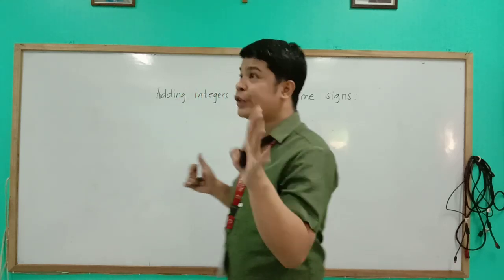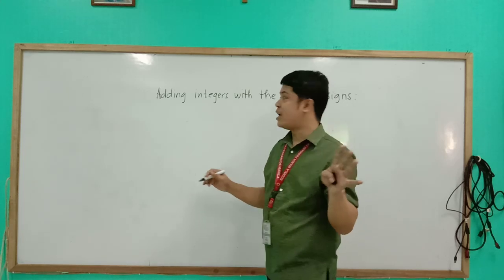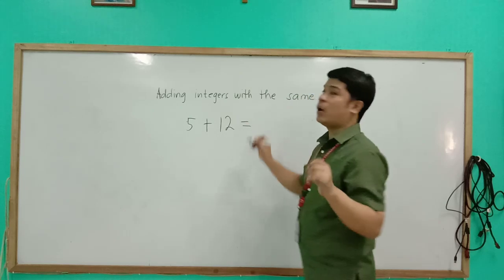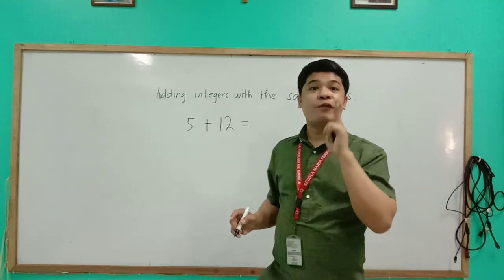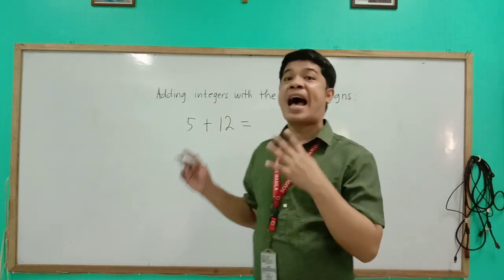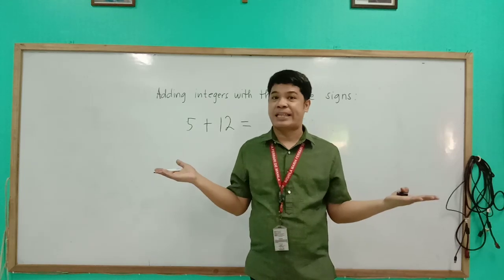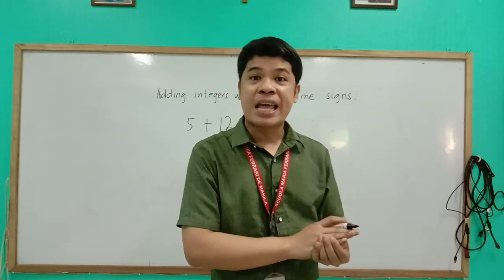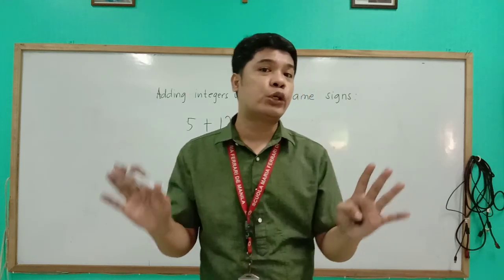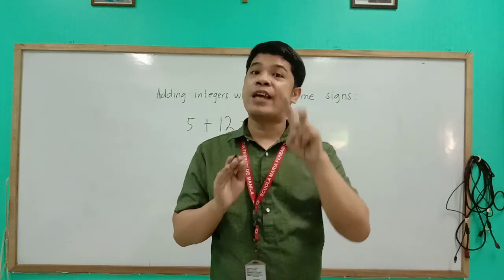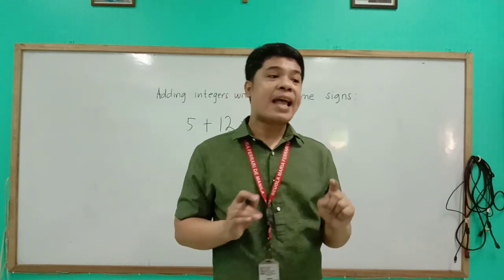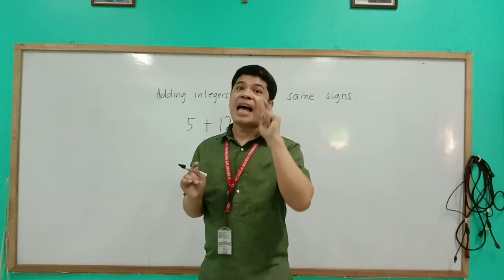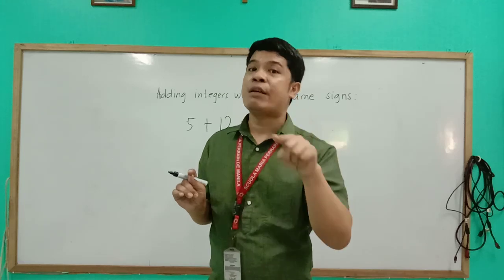The first problem that we will be solving is positive 5 plus positive 12 equals. So let us review first the rule in adding integers with the same signs. The rule is we will add the absolute values of the given two integers, and then we are going to use the sign from the given problem.